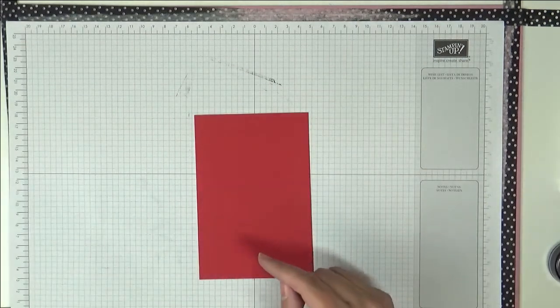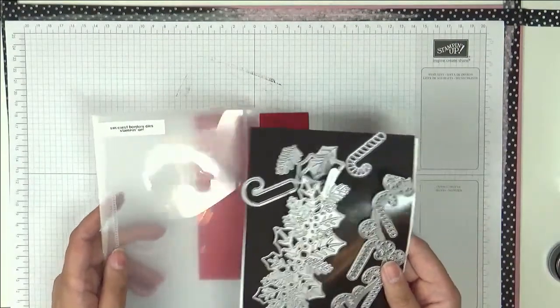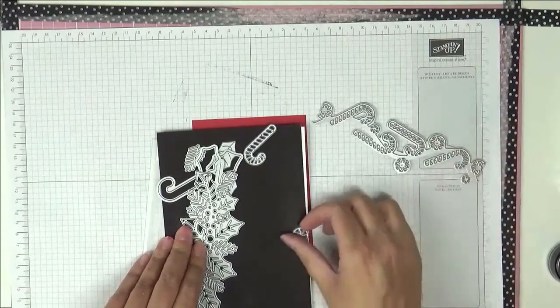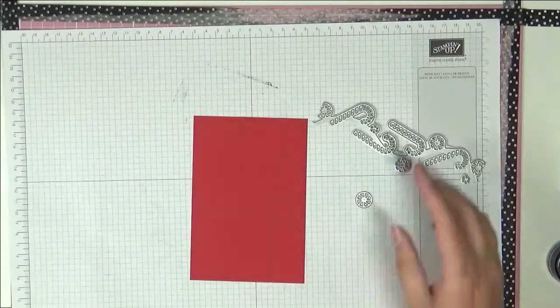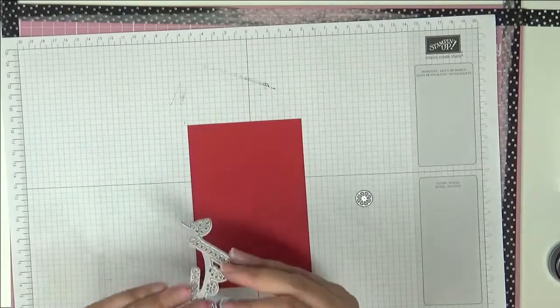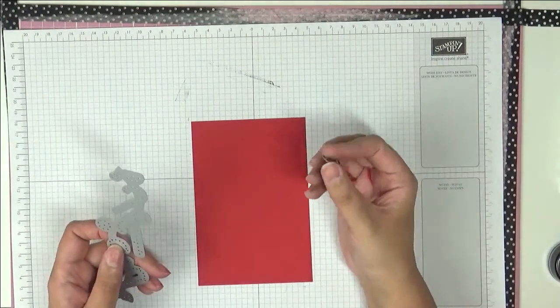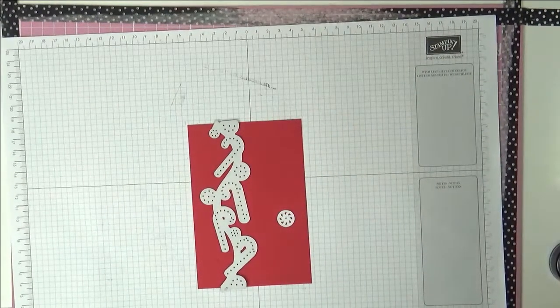We're going to use this to cut out our die cut. I'm using these ones called the Sweetest Borders Dies, and it's this die we're going to be using here and this little one here. As you can see there's quite a few different dies here to use. We're going to cut this out five times, so I'll put that all through the die cutting machine and I'll be back. Okay, so I've cut everything out.